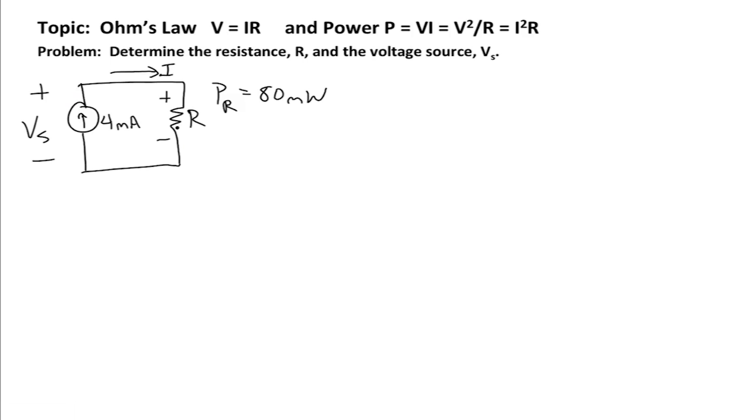We know that using the equation for power, power is equal to I squared times R. But we're given the power in this problem. The power in the resistor is equal to 80 milliwatts.